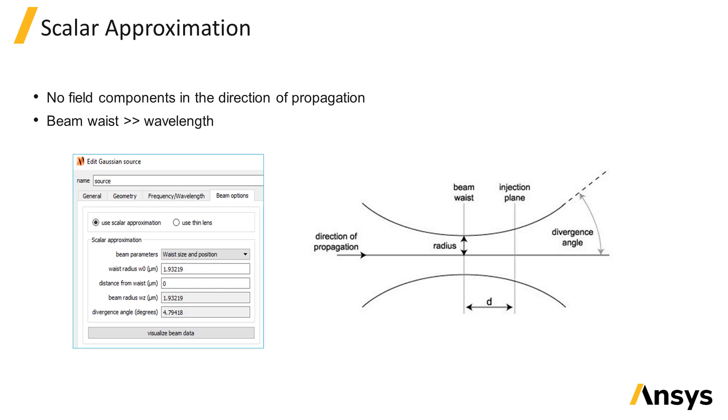There are two methods to calculate the field profile of the beam: the scalar approximation method and the thin lens method. The scalar approximation method assumes that the beam doesn't include any field components in the direction of propagation.